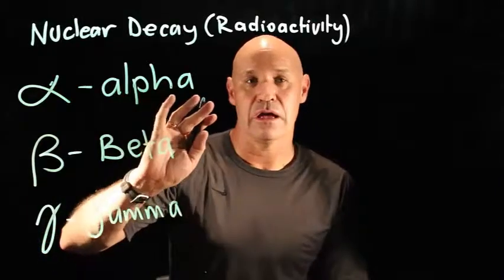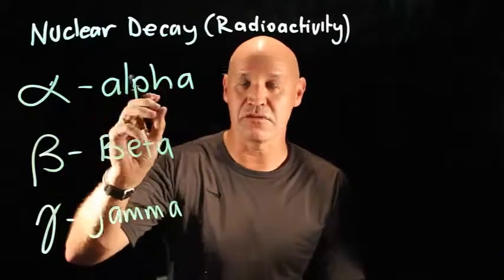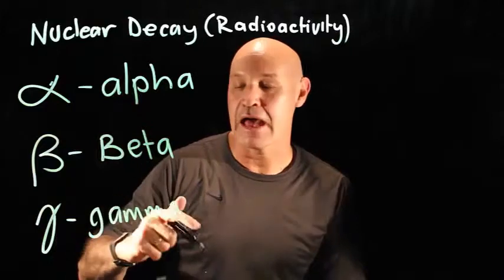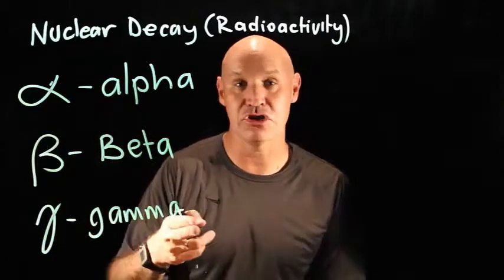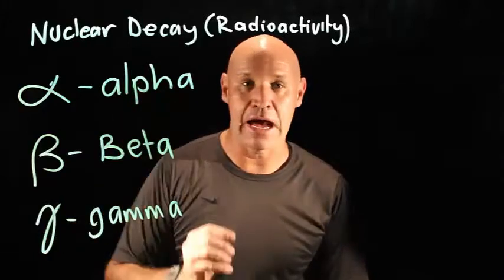What tends to happen is elements either undergo alpha decay or beta decay, and at the same time they release energy in the form of radiation called gamma rays.